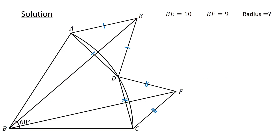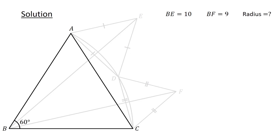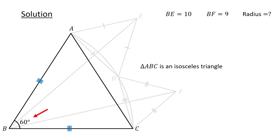And now for the solution. First, connect A to C and then consider triangle ABC. Since AB and BC are the radius of the circle, we have AB equals BC and triangle ABC is an isosceles triangle. But angle ABC is 60 degrees. Thus, the triangle is an equilateral triangle. Therefore, we have AC equals AB equals BC.